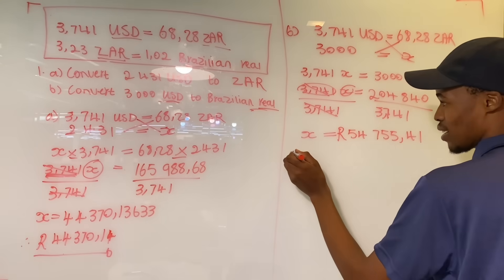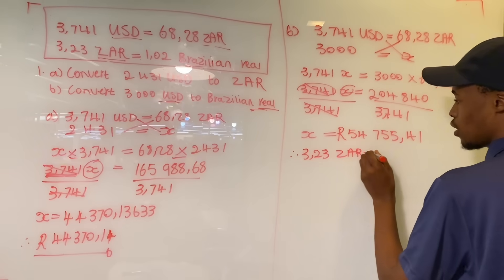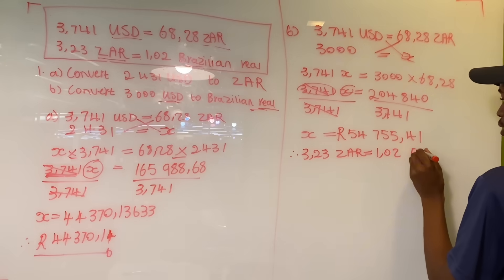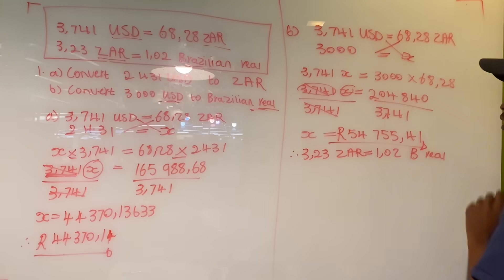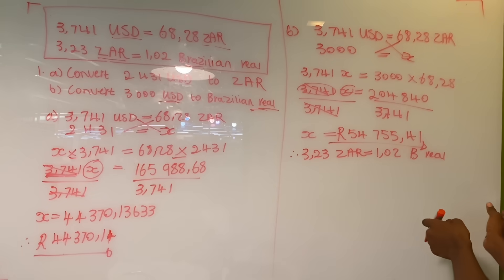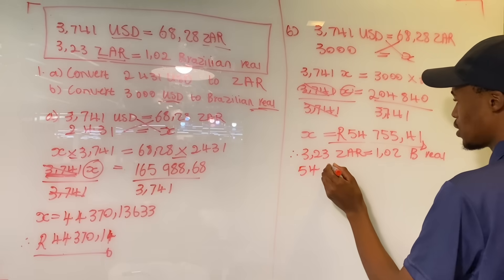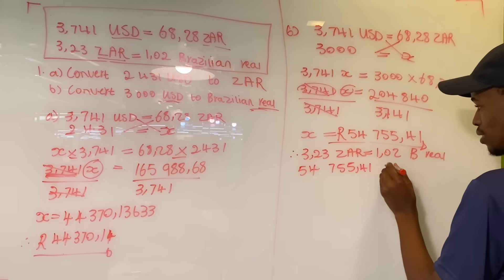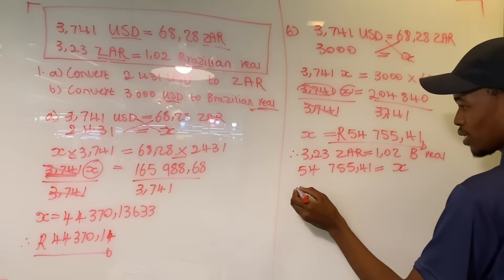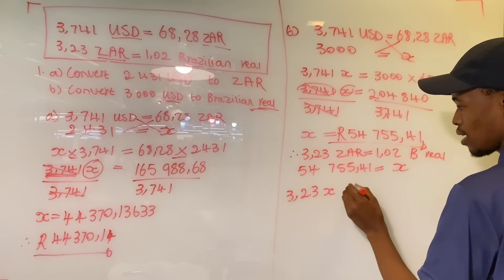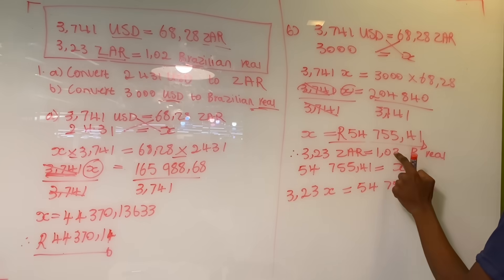Now we have to take the rands to Brazilian real. We start by copying the information given: 3.23 South African rands equals 1.02 Brazilian real. We put rands on one side and Brazilian real on the other. We do have the rands — 54,755.41 — which we got from our previous calculation. Since we don't have the Brazilian real, we put x on that side.